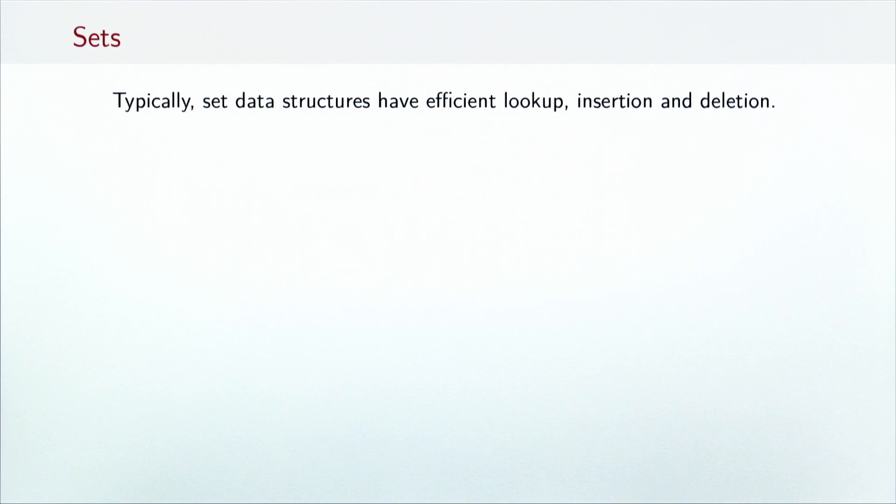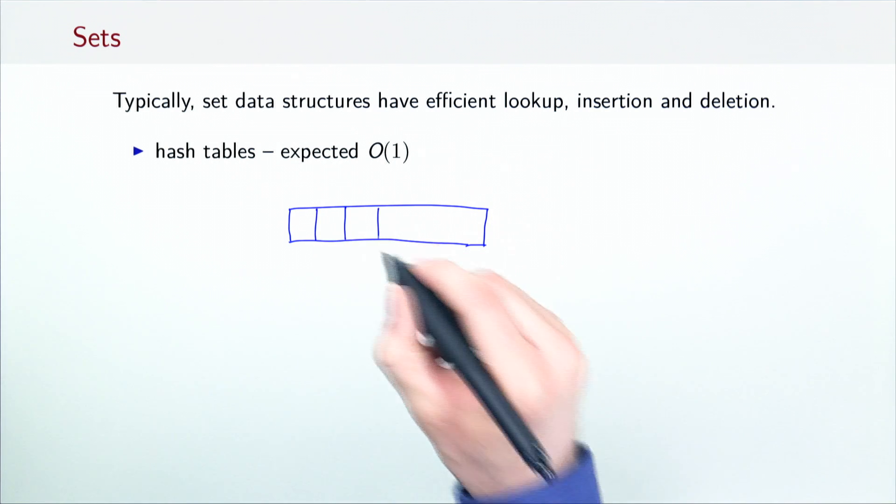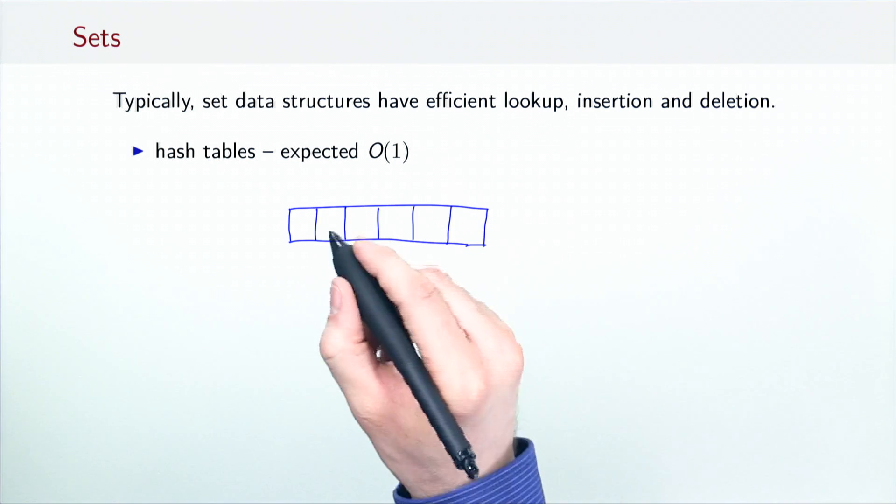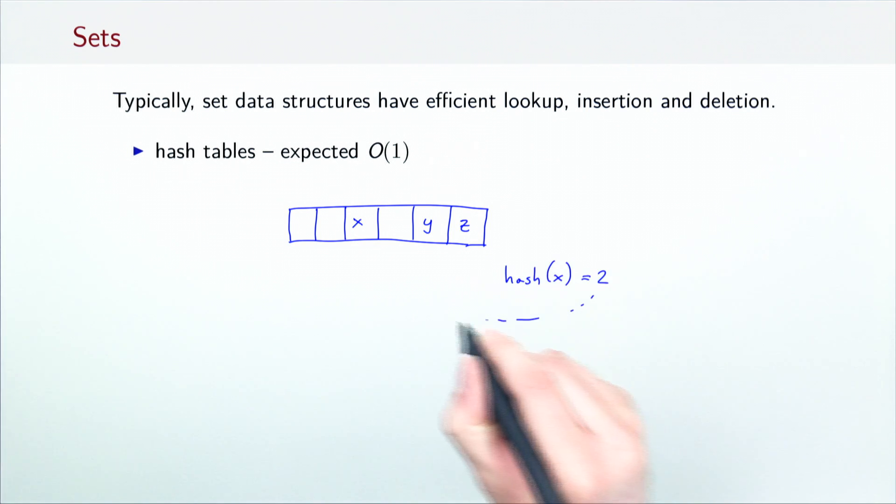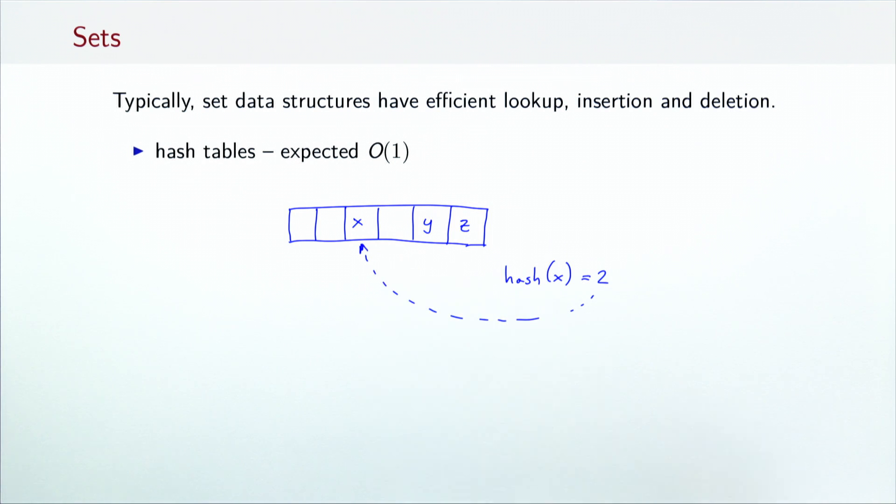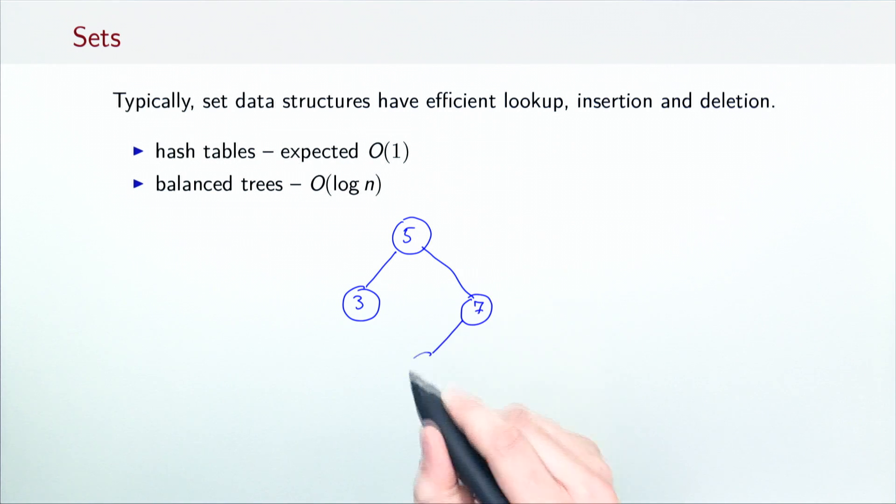Let's consider some other data structures typically used in programming languages to implement sets and maps, and the efficiency of their operations. A hash table is a contiguous block of memory partially populated with elements. To find or modify an element, we compute its hash code and use it to locate the element. Insert, remove, and lookup operations thus take expected constant time O(1).